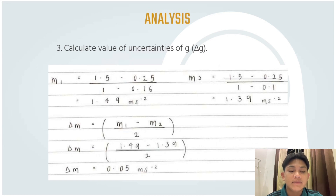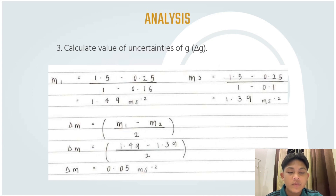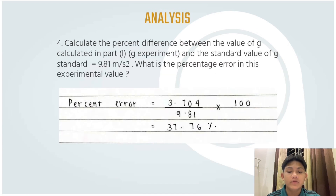To find the uncertainty, we use the formula: Δm = (m1 - m2) / 2. Substituting the values: Δm = (1.49 - 1.39) / 2. Using the calculator, we obtain the uncertainty of g as 0.05 m/s².